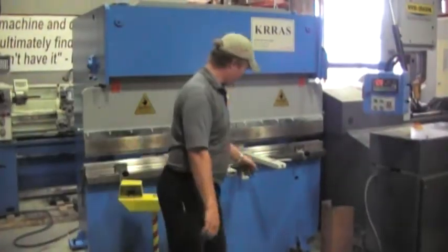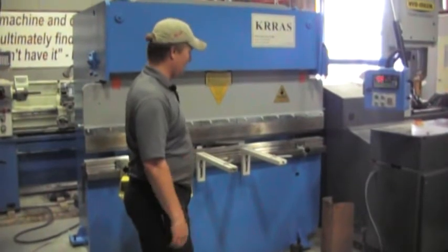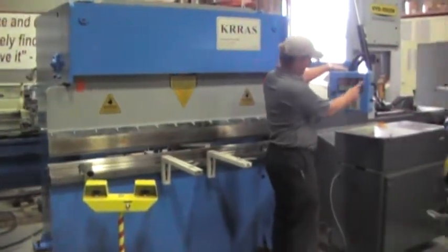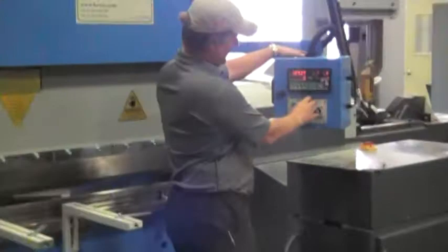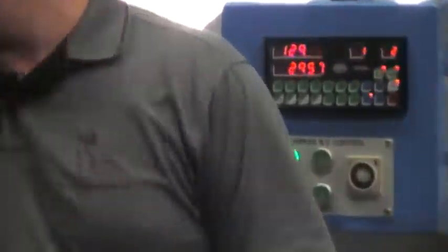We've programmed the second part. It's just a basic kind of a basic channel. What I'm going to do, I'm just going to go to auto. Program two. Select it. Machine's going to come to position first program. I'm just going to bend two of them.